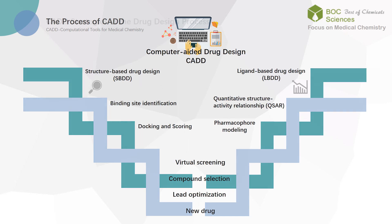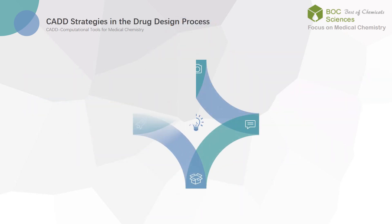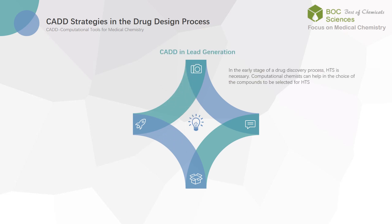There are some computer-aided drug design strategies in the drug discovery process. First, computer-aided drug design and lead generation. In the early stage of a drug discovery process, high-throughput screening is necessary. Computational chemists can help in the choice of the compounds to be selected for high-throughput screening.